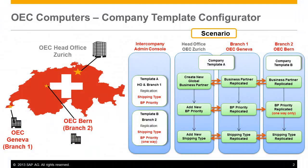With the new release of Intercompany Integration Solution 2.0 for SAP Business One 9.0, the Administration Console has been extended to support a Company Template Configurator. A Company Template Configurator allows users to create custom integration templates that can be assigned to their branch companies within their intercompany landscape.